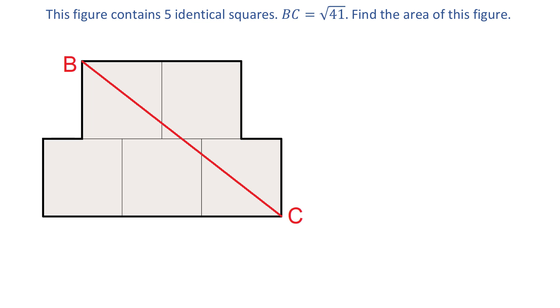To find this area, first we need to find the side of one square. But how can we find one side if we only know that the distance from point B to point C is square root of 41?